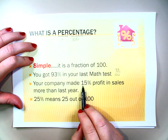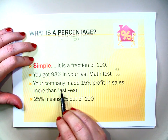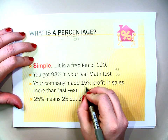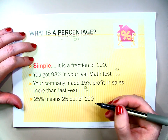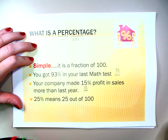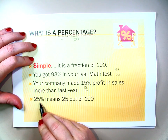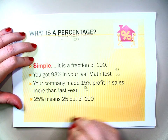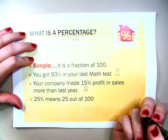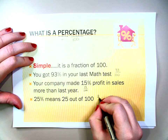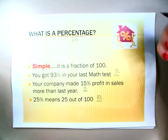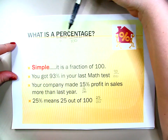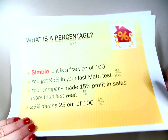Your company made 15% profit in sales more than last year. Another way to write that would be 15 over 100. Now this can be simplified further, and we will be exploring how we do that a little later on. 25% means 25 out of 100, which is 25 divided by 100. All that a percentage is, is per 100, or divided by 100.